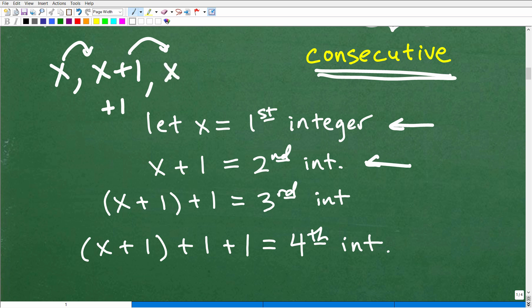So our second integer would be x plus 1, and then if I take x plus 1 and add a 1 to it, this would be my third integer, x plus 1 plus 1 or x plus 2. That would be my third integer, and then of course if I add another 1 to it, so I get x plus 1 plus 1 plus 1 or x plus 3, this right here would be my fourth integer, 1, 2, 3, 4.